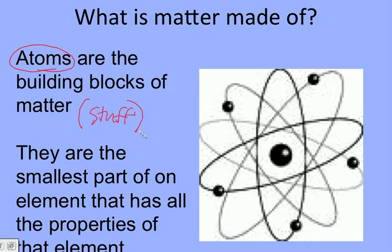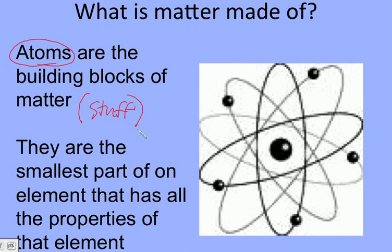Everything is made up of matter — people, plants, animals, rocks, water, air — anything we can find is made up of these atoms. Atoms happen to be the smallest part of an element that has all the properties of that element. We can take any element on the periodic table and break it down to its atomic level, its smallest, tiniest piece.